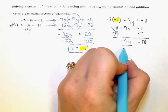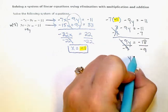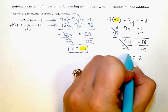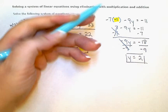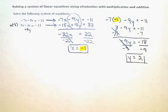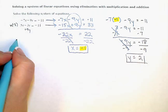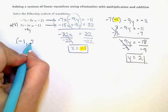Divide by negative 9, and y is equal to positive 2. Negative 18 divided by negative 9 is positive 2. So the solution to my system here is x equals negative 1, y equals positive 2.